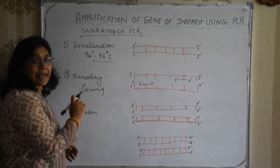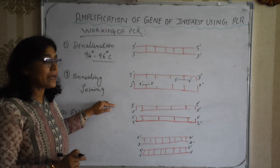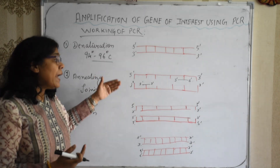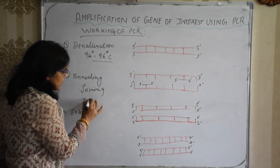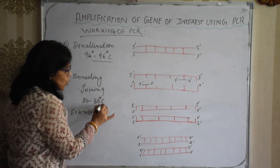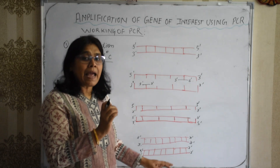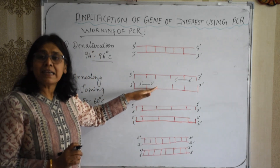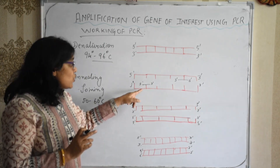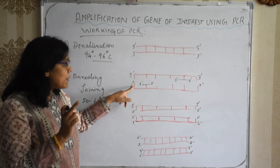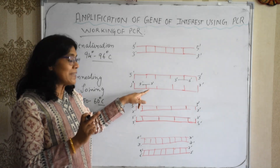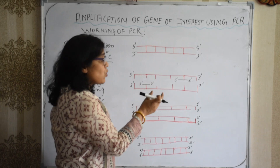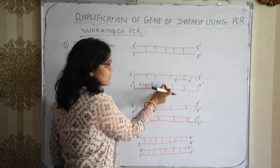The next process is annealing, which means joining. After heating the DNA duplex, it is cooled to 50 to 60 degrees centigrade for less than a minute. At that time, the primer gets attached to the single-stranded DNA template at the three-prime ends, with the three-prime ends of the two primers facing each other.